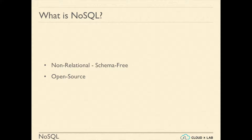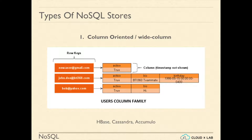Every NoSQL data store stores records. Based on the type of record a NoSQL can store, it is classified into four categories. The first one is column-oriented or wide column. These are very close to relational databases. They have a tabular structure. Examples of such databases are HBase, Cassandra, and Accumulo.